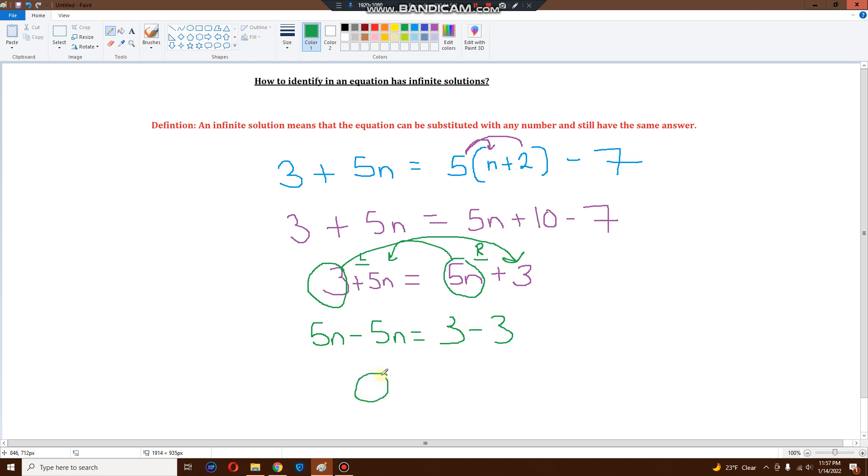5n minus 5n is 0. 3 minus 3 is 0. Infinite solution. Or you could put the sign. And there we go. Ladies and gentlemen, this is how you basically prove if an equation has an infinite solution. Thanks so much.